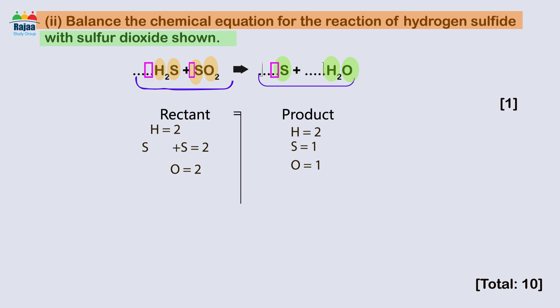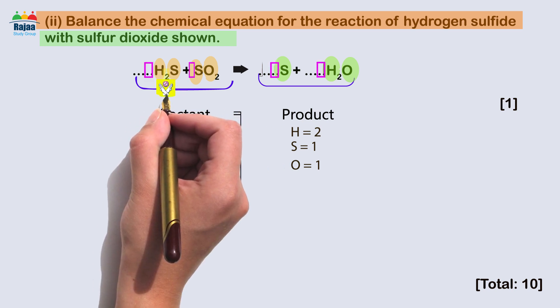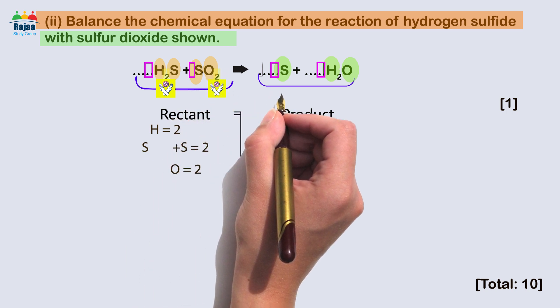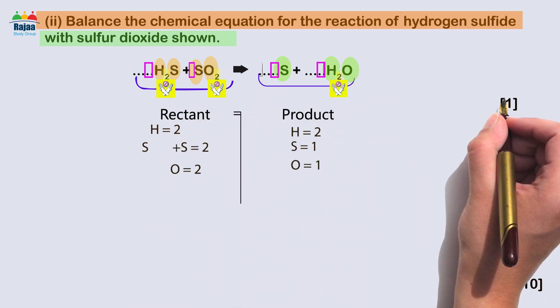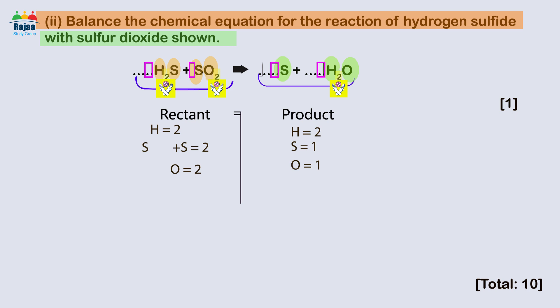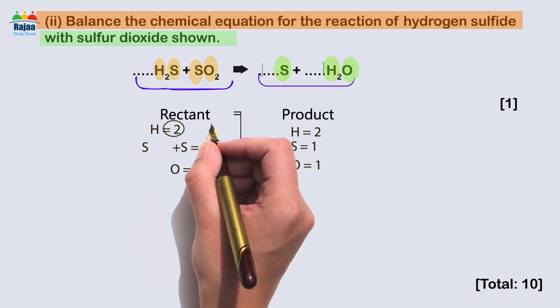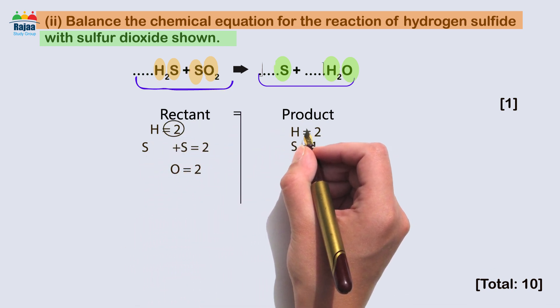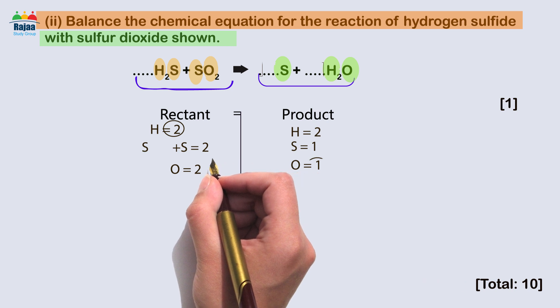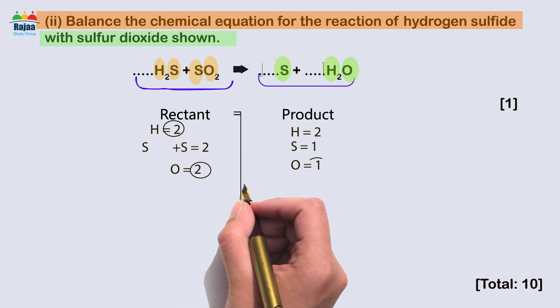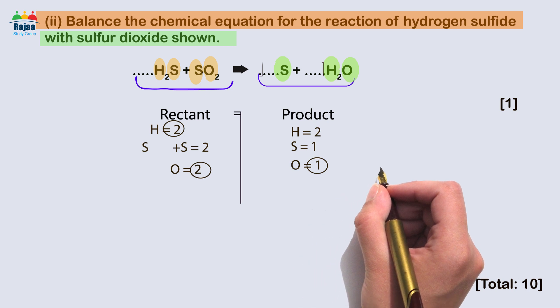After listing atoms on both sides, the main role of the balancing equation is to simply change the coefficients in front of the atoms. The number following the atoms in the subscript cannot be changed. We have two hydrogen on each side, as well as two oxygen on the reactant side and one on the product side. To correct the unbalanced oxygen, I set the coefficient in front of the H2O on the right to two.